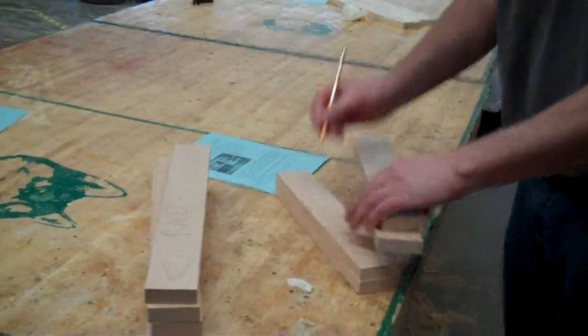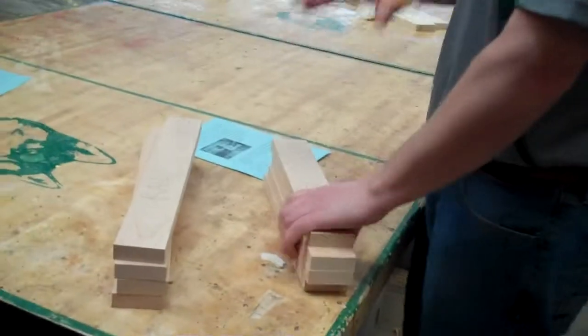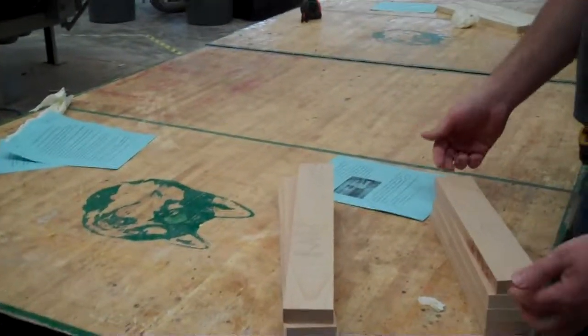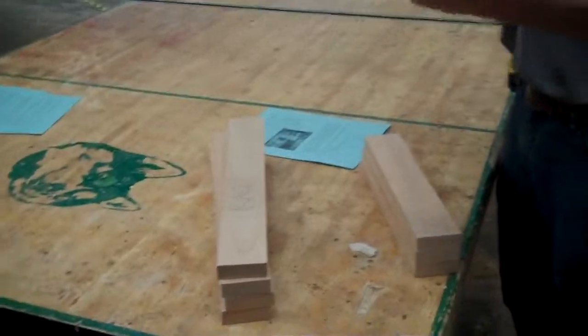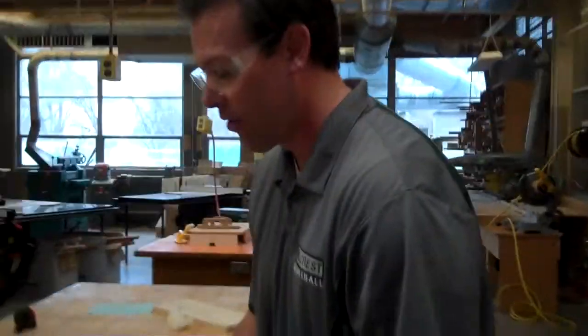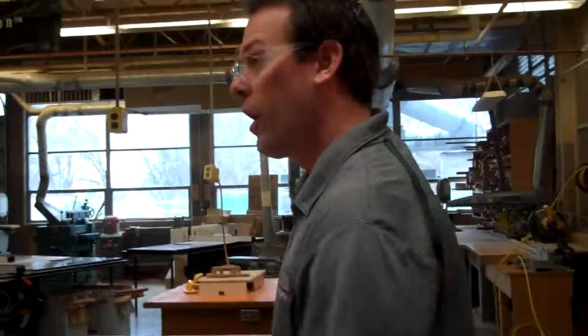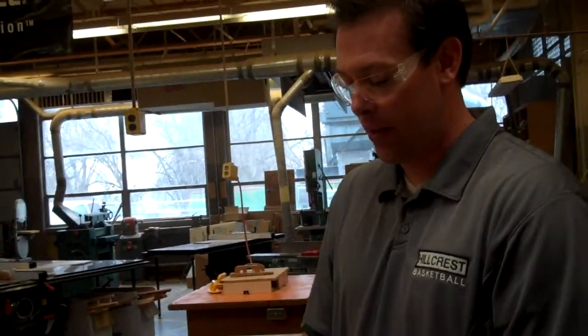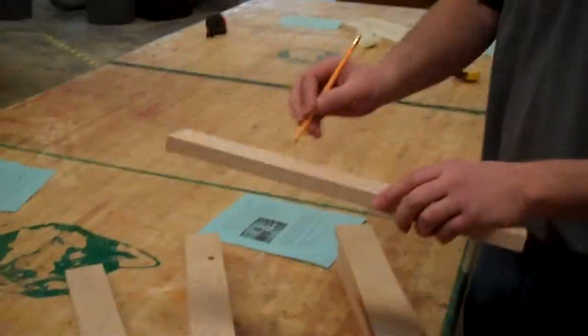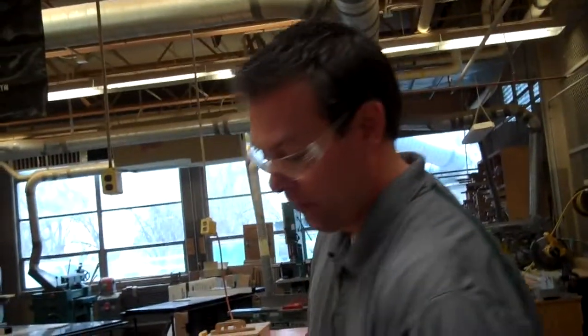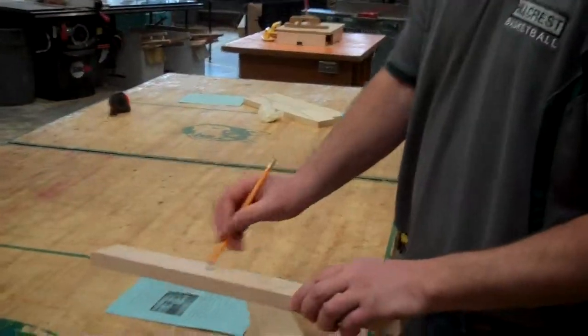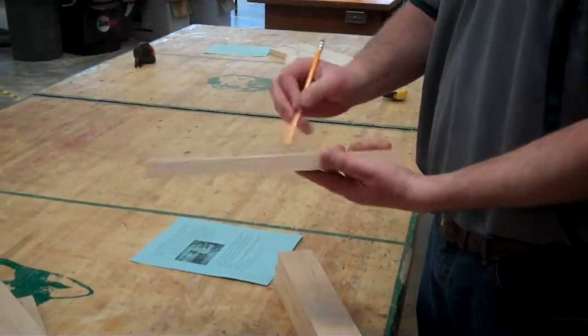I'm just going to write an S for style. Maybe that's faster and easier. You can write an R for rails instead of writing it all out. But label them so you know which is which. So when you take this over to the shaper table there and have to do the rail end cutter, you don't accidentally do the rail end cutter on your styles. We want to do it on the rails. We also want to mark the best face with an X. Whatever face you like the best, put your X on it. I like that one better. Do that to both rails and styles.